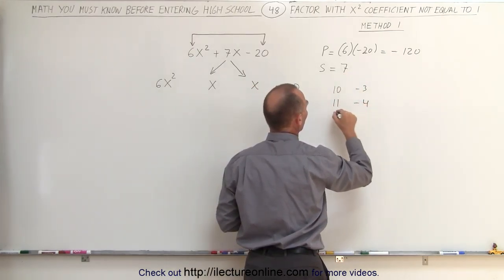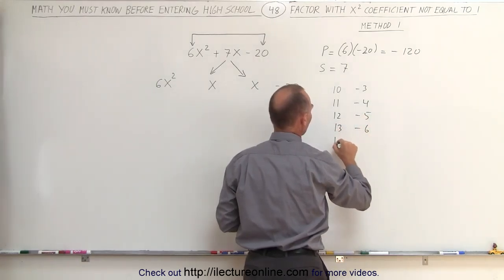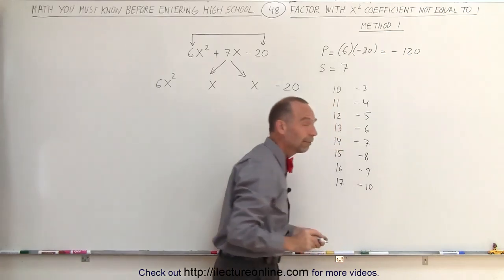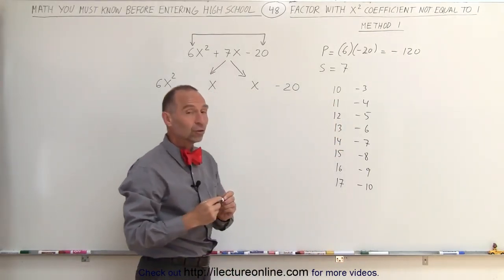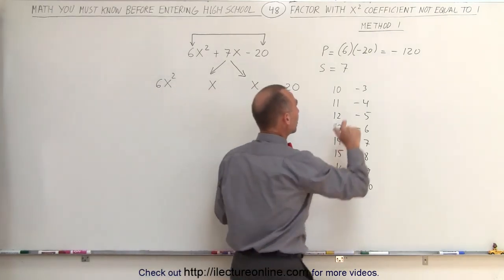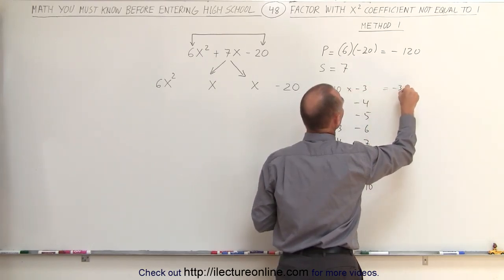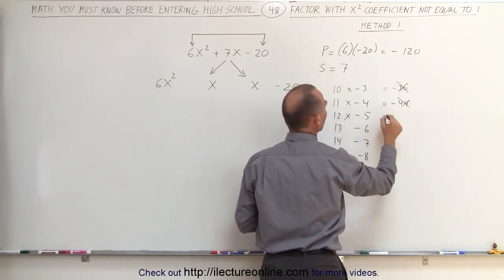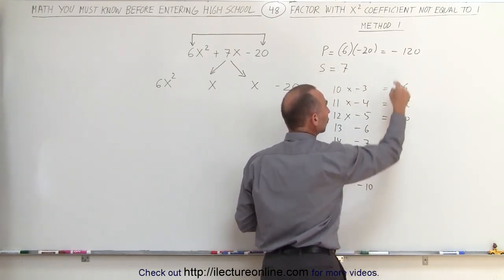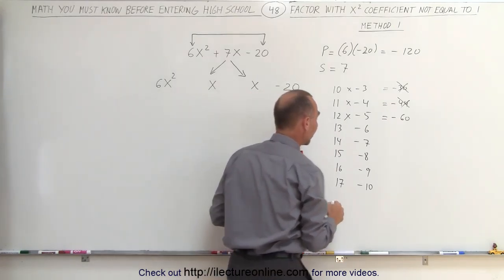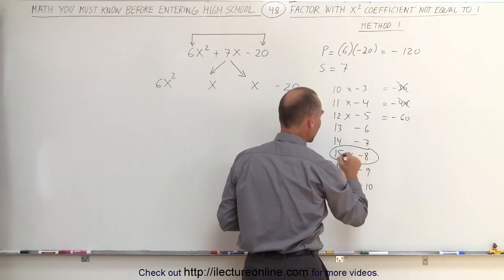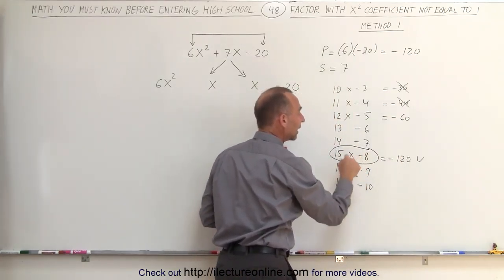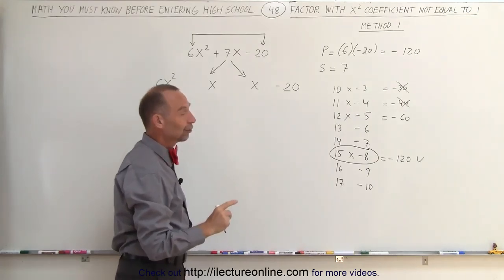So what are the possibilities? For example, you can have 10 and negative 3 — when you add those, you get positive 7. However, when you multiply them, you get negative 30, which is not negative 120. You can try 11 and negative 4, 12 and negative 5, 13 and negative 6, 14 and negative 7, 15 and negative 8, 16 and negative 9, 17 and negative 10, and so forth. Only one combination gives negative 120 when multiplied. Notice you're getting closer and closer to the target value. Eventually you realize that 15 times negative 8 gives minus 120, which is correct. And when you add 15 and negative 8, that gives positive 7. So that's the combination.